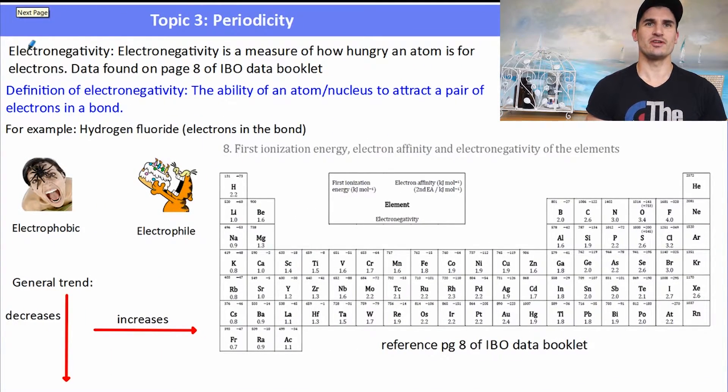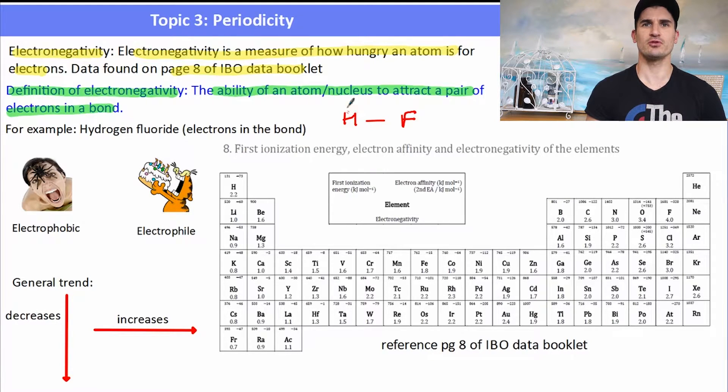So the first one, electronegativity. Electronegativity is a measure of how hungry an atom is for electrons. It's how much it wants to gain or rip those electrons from anything that's got them floating around. Now the data for electronegativity can be found on page 8 of the data booklet. The definition though, you need to get this down. The ability of an atom or nucleus to attract a pair of electrons in a bond. So if we have hydrogen fluoride, for example, that bond has two electrons. Hydrogen has an electronegativity of 2.2. Fluorine has an electronegativity of 4.0, which is much greater than the hydrogen. So that means the electron in the bond is closer to the fluorine nucleus. It's attracting that electron more strongly. It's got a greater share of that bonding pair of electrons.